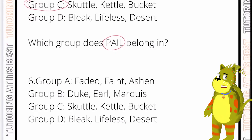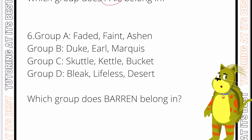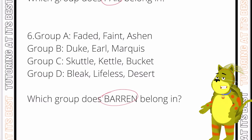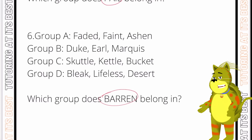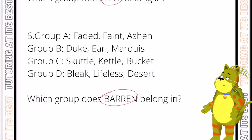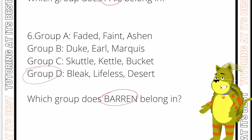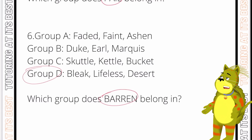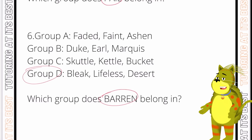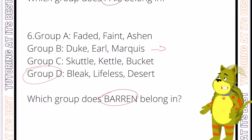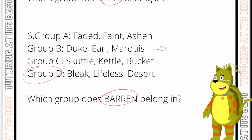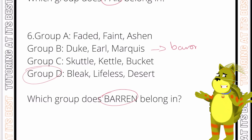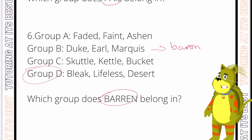Question six: which group does 'barren' belong in? Instantly, looking at all the words in these groups, we would select group D, because all of those words describe land which is unable to support much vegetation — and barren means the same thing, so it belongs in group D. If you got confused with group B, the words in group B are all ranks of nobility, so 'baron' spelled b-a-r-o-n would go in there.